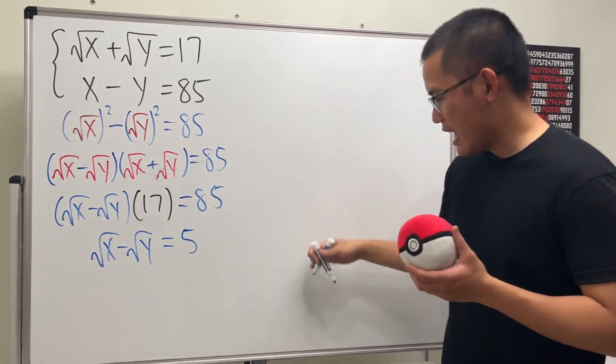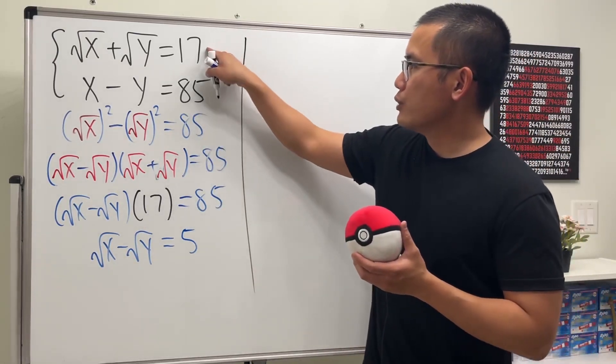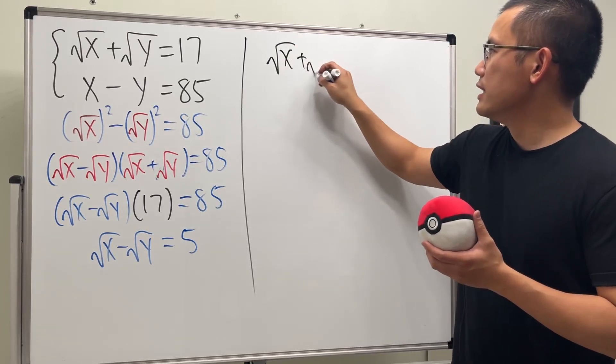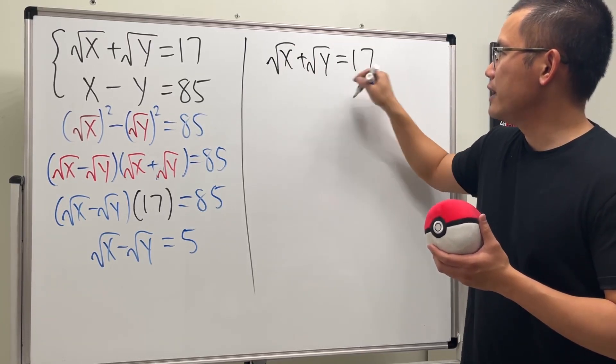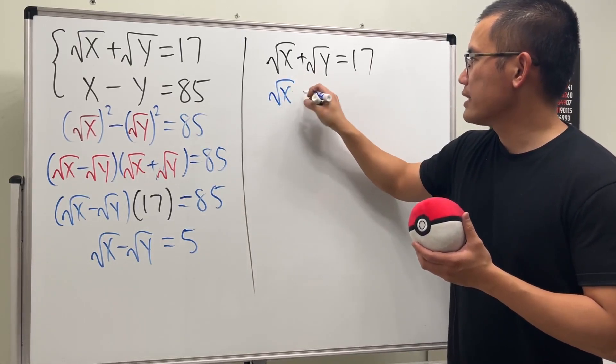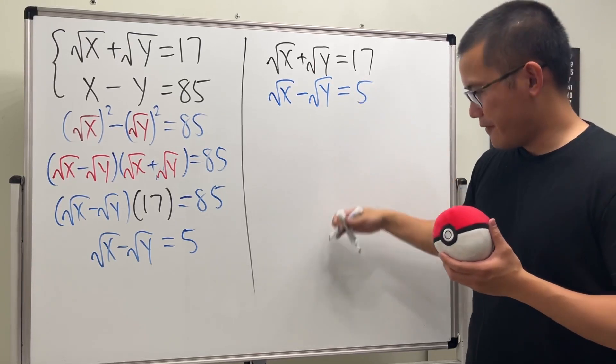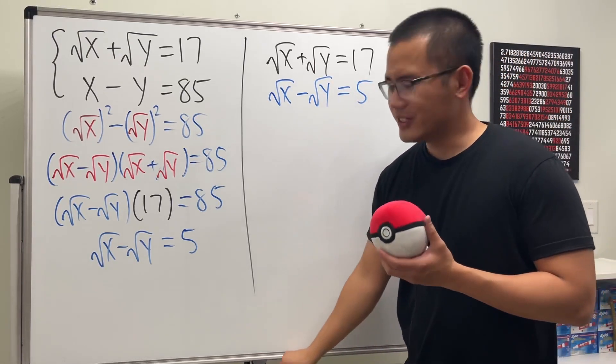Now I'm just going to look at this equation, which is square root of x plus square root of y being equal to 17, and then the other equation is square root of x minus square root of y being equal to 5. So much better, so so so much better because this system of equations...